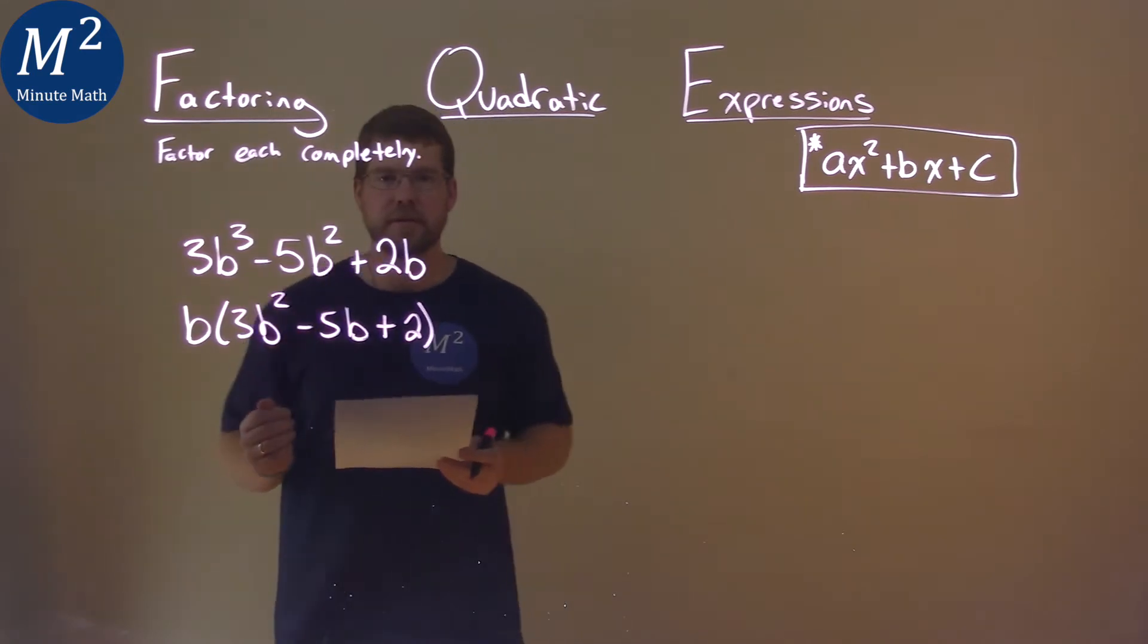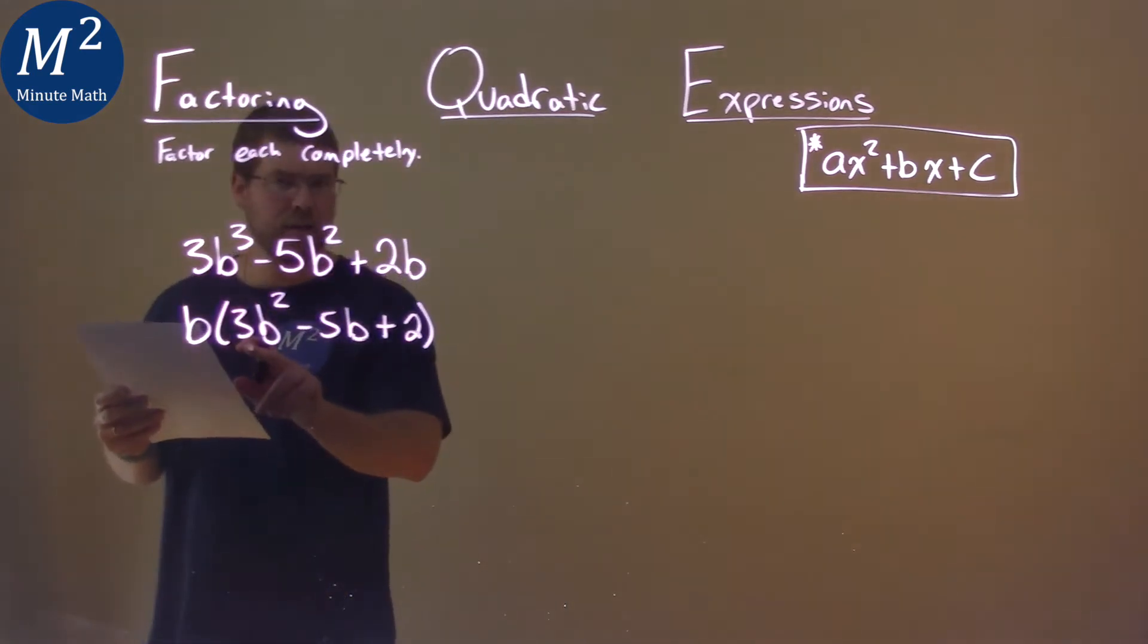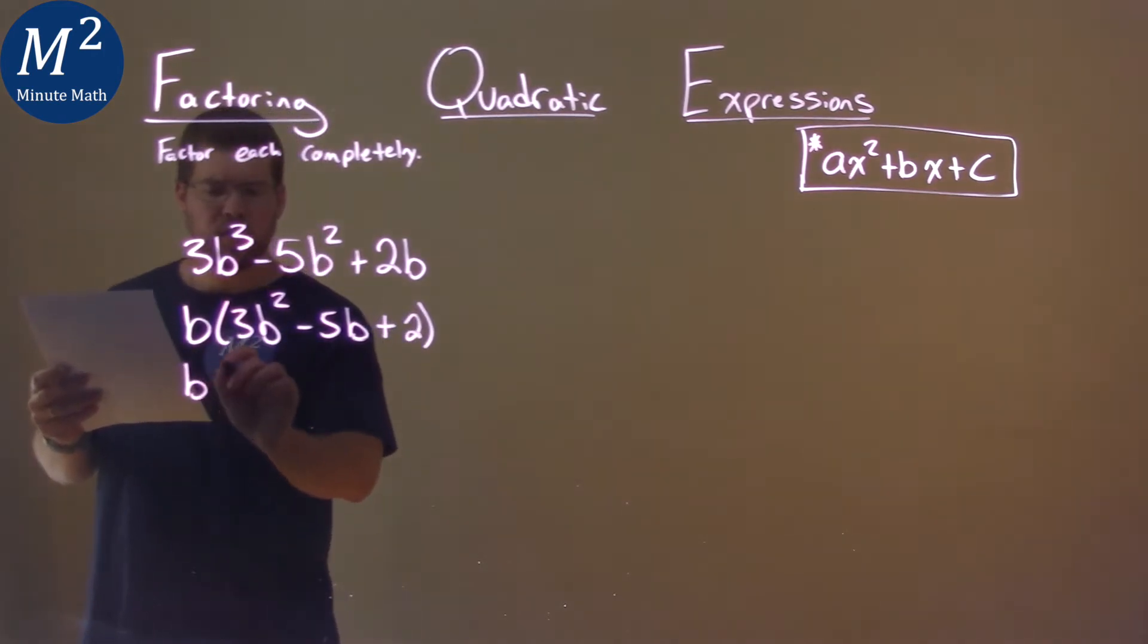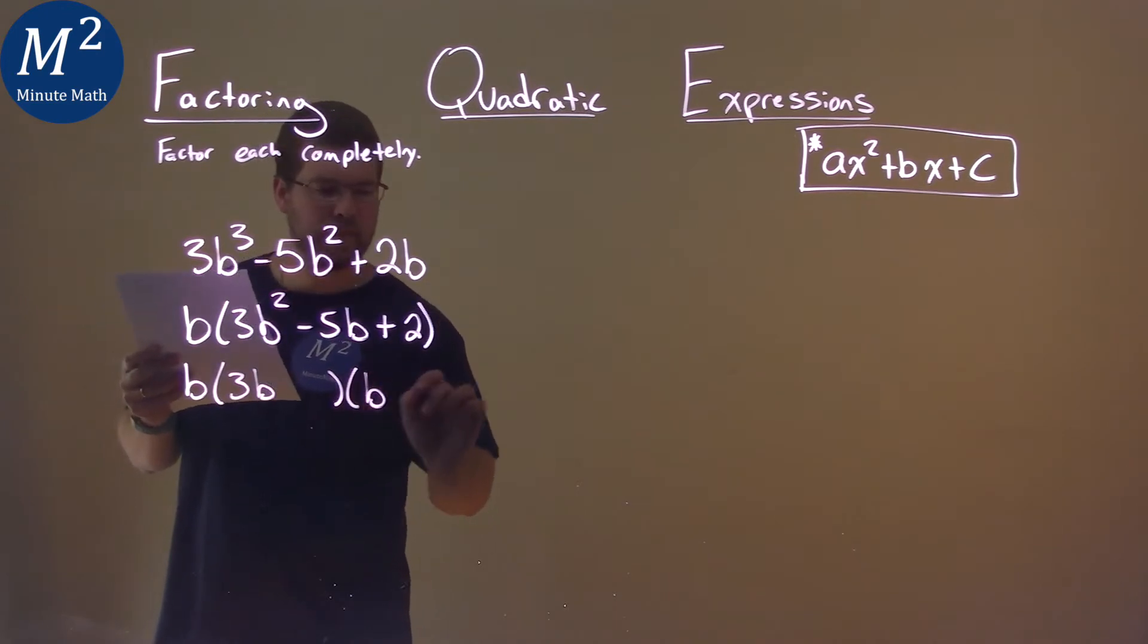Now from here, we need to deal with the inside part. We see our a value here, the inside part, is a prime number. So we know this is going to have some form of 3b here times 1b, like that.